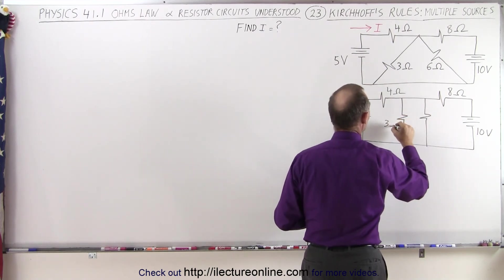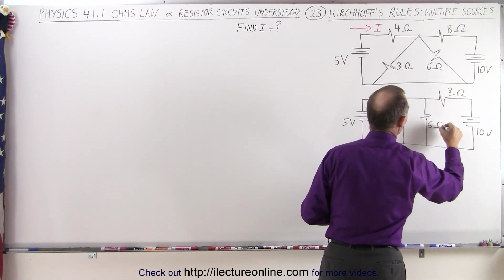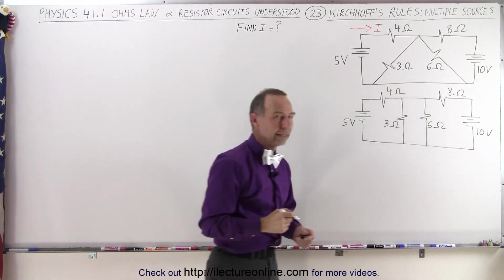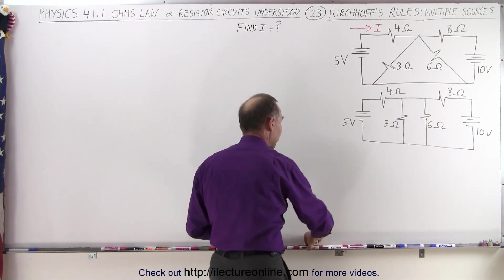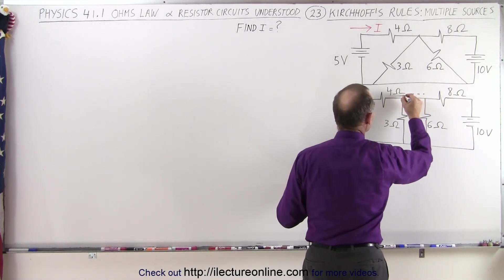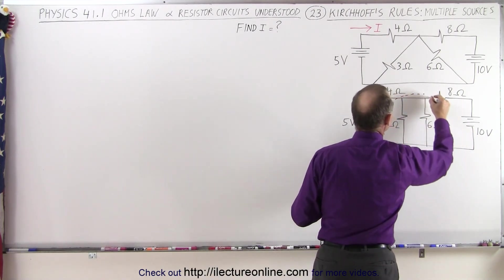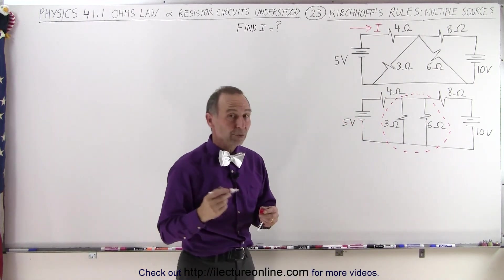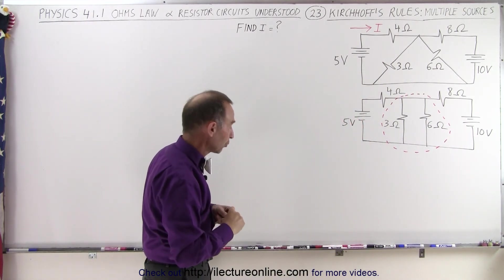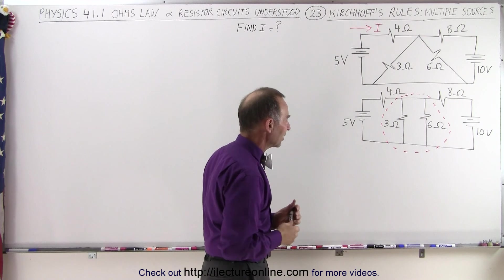And this becomes a three-ohm resistor and a six-ohm resistor parallel to each other. And now we can take a look at these two branches and reduce those into a single branch first before we try to solve the problem using Kirchhoff's rules, and that makes things just a lot easier.